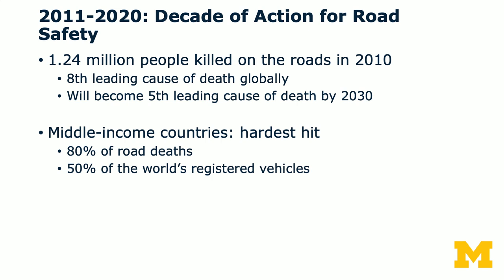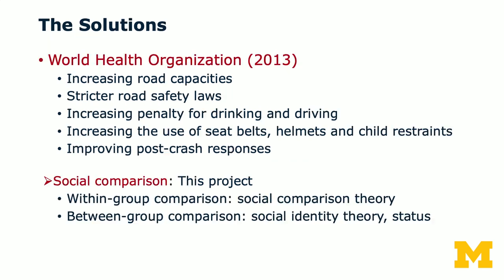Middle-income countries were the hardest hit — they account for about 80% of road deaths but only have 50% of the world's registered vehicles. The World Health Organization made several recommendations: countries should increase road capacities, impose stricter road safety laws, increase penalties for drunk driving, increase the use of seat belts, helmets, and child restraints, and improve post-crash responses. These are good recommendations, but they're expensive.